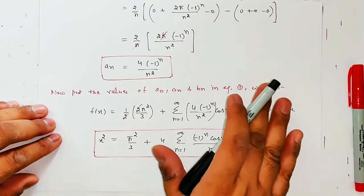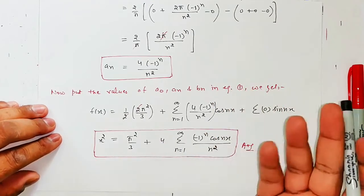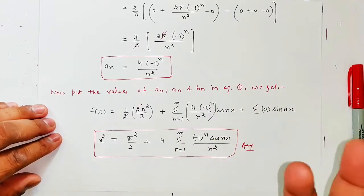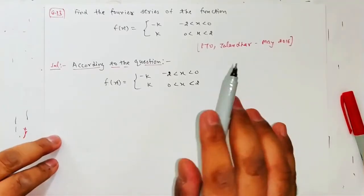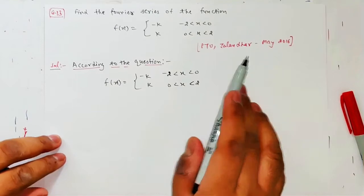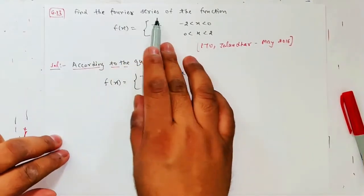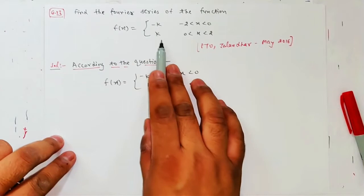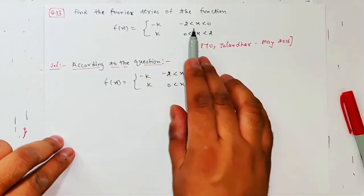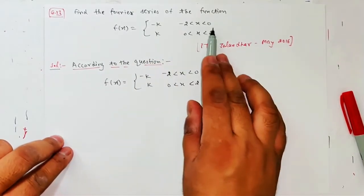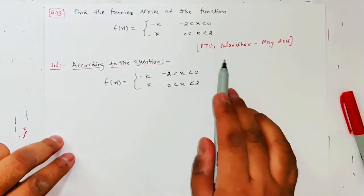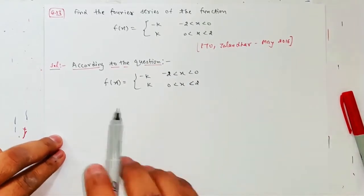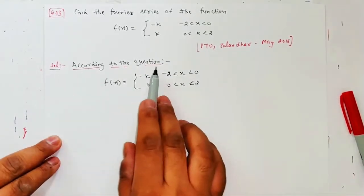Ab ek question aur start karte hain even and odd function pe. Toh question number 13: Find the Fourier series of the function where f(x) = −k for −2 to 0, and f(x) = k for 0 to 2. Yeh particular question aa chuka hai PTU Jalandhar mein 2016 mein. Toh solution start karte hain according to the question.